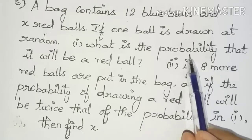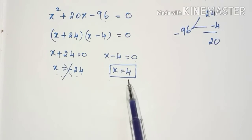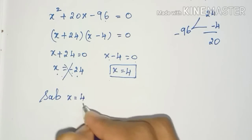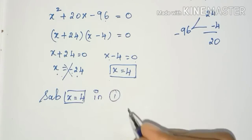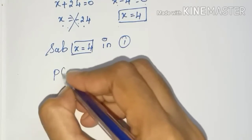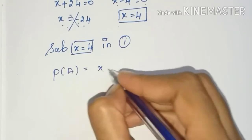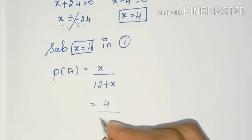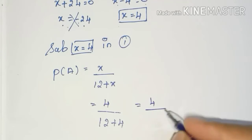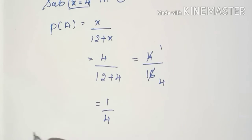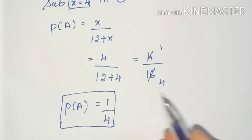Now we find the probability of getting a red ball by substituting x = 4 into equation 1. P(A) = x divided by (12 + x) = 4 divided by (12 + 4) = 4 divided by 16 = 1/4. So the probability of getting a red ball is 1/4. This is our answer.